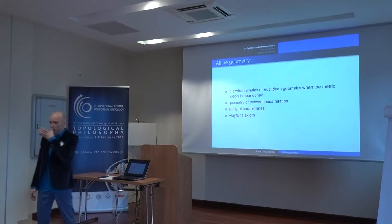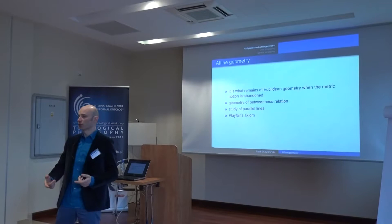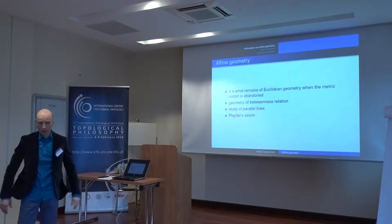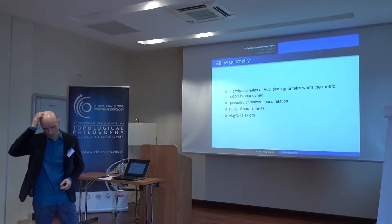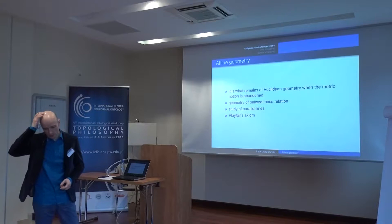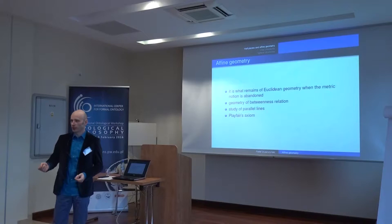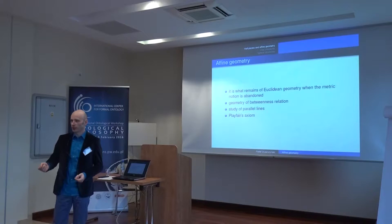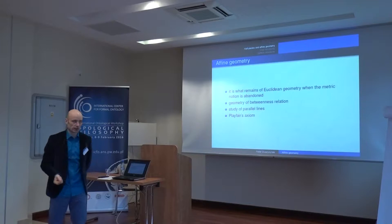The first part of the presentation is Śniatycki's result. I would like to focus on the spatial and combinatorial ideas behind his constructions rather than just formulas and axioms. Affine geometry, from one perspective, is what remains of Euclidean geometry when you only have betweenness but no metric notion. Or you may look upon it as a study of lines and parallelity of lines. For example, the Playfair axiom — which says that given a point beyond a line, there is only one parallel line — is one of the axioms of affine geometry.